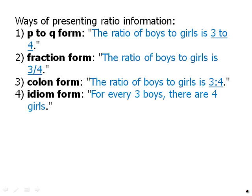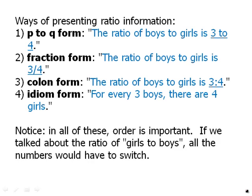All 4 of these contain exactly the same information. Now, of course, of these 4 forms, the most useful by far is fraction form, because when we rewrite the ratio in fraction form, then we can do math with it. Notice, in all of these, order is important. If we talked about the ratio of girls to boys, all the numbers would have to switch. So if we add girls to boys, that would be 4 to 3 or 4 thirds, something along those lines.